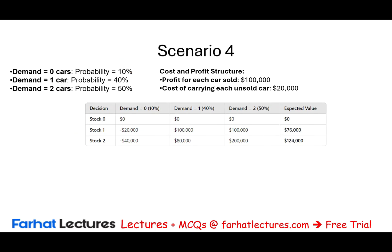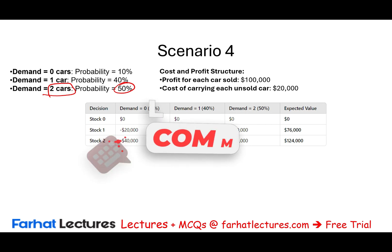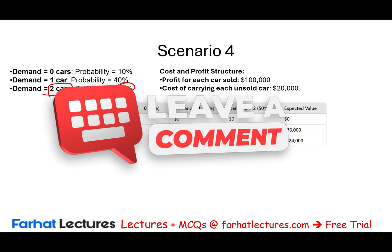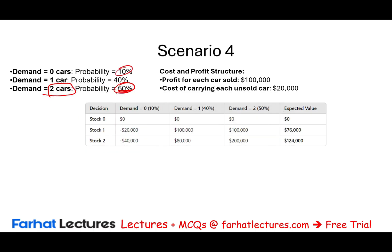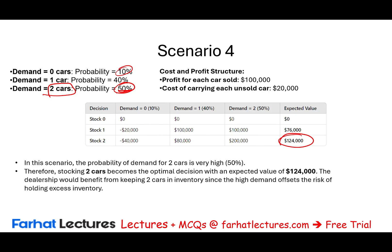Scenario four is optimistic: there's a 50% chance of selling two cars, based on surveying customers and observing that every dealership buying these cars is selling at least two. The probability of zero demand drops to 10%. The expected value for two cars is $124,000, so under this scenario you're most likely to go with two cars — though the risk of losing $40,000 if nothing is sold remains a factor depending on the dealer's risk tolerance.